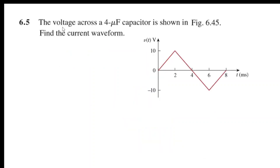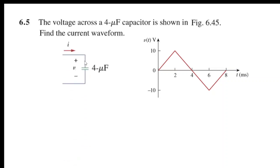The question says: the voltage across a four micro-farad capacitor is shown in the figure. This is the graph that shows the voltage across the capacitor. We have to find the current waveform. Keep in mind that this is a four micro-farad capacitor — the voltage is given, and we need to find the current through the capacitor.